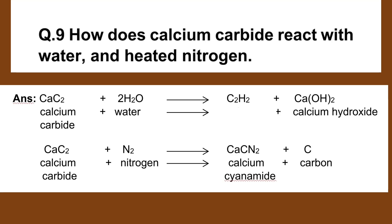Number 9. How does calcium carbide react with water and heated nitrogen? CaC2 plus 2H2O gives C2H2 (acetylene) plus Ca(OH)2. For calcium carbide reacting with nitrogen: CaC2 plus N2 gives calcium cyanamide.